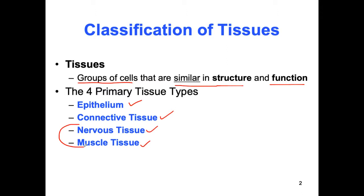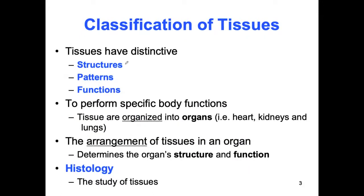Nervous and muscle are probably the easiest and shortest to learn. Connective is probably the longest, and epithelium is not so long. There is a major difference between epithelium and connective, especially under the microscope. All tissues have distinctive structures or patterns — structure determines function. When tissues come together they form different organs like the heart, kidneys, and lungs. The study of tissues is called histology.